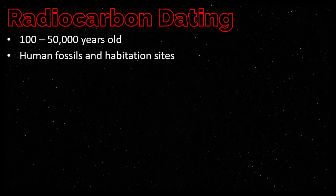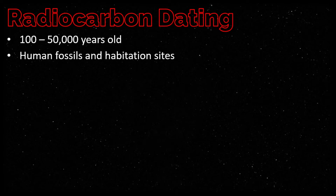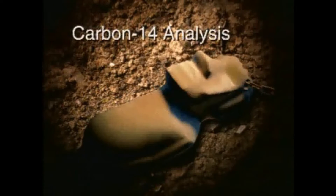Radiocarbon dating is used to find the age of once-living materials between 100 and 50,000 years old. It is usually used to determine ages of human fossils and habitation sites. Suppose you've discovered an ancient bone amulet in an archaeological dig and you want to know its age — you can use the rate of decay of carbon-14 to determine the artifact's age.